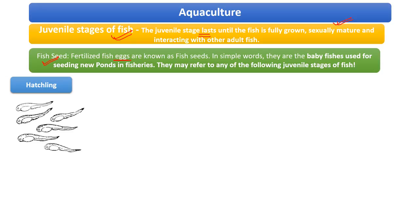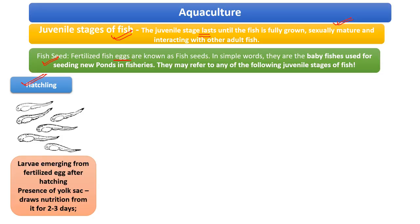The first is the hatchling stage. You can see the picture here. After the fertilized egg has hatched, larvae emerge out of it — it is also called a hatchling. There is a presence of a yolk sac, as you can see in the picture. At this stage, the fish is not capable of feeding itself, so it has the presence of a yolk sac and draws nutrients from it — that is the reason for its survival.